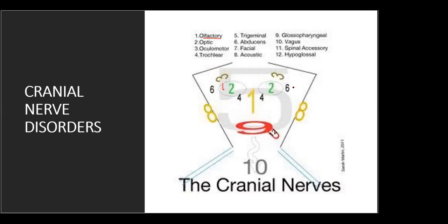Eight is the acoustic nerve — think acoustic neuroma. Nine is glossopharyngeal — a major point is it elevates the back of the tongue. Ten is the vagus nerve, which regulates heart rate and the intestines, airways, lungs, and gastrointestinal tract. Eleven is the accessory or spinal accessory nerve for neck muscles. Twelve is the hypoglossal nerve for tongue innervation.